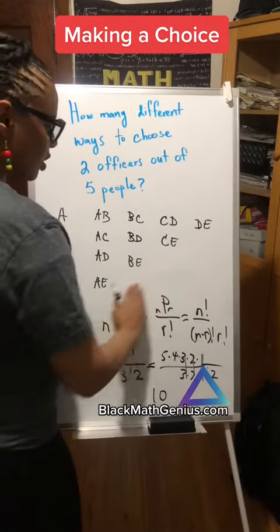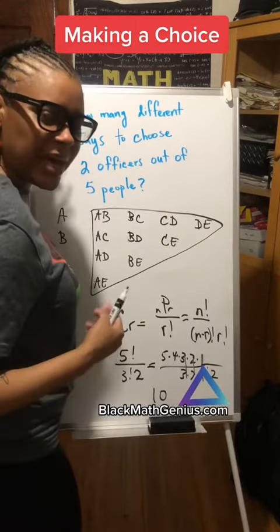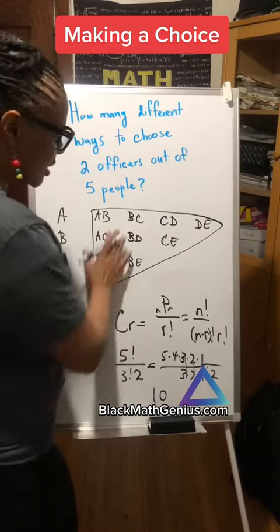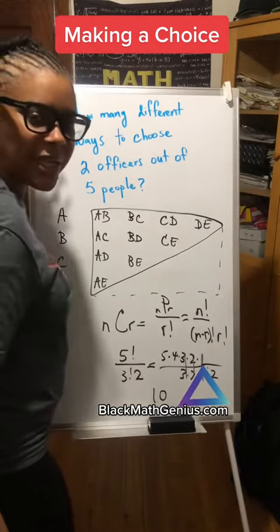I also want you to pay attention to this shape here. Mathematics is about patterns, recognizing patterns. Notice that this is a triangle, and a triangle is half of a rectangle.